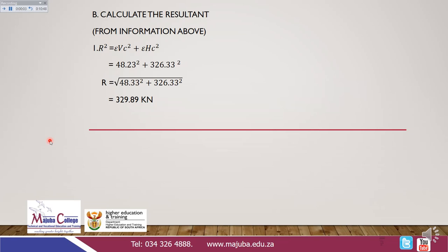If asked to calculate the resultant from the above information, we use the theorem of Pythagoras: R² = ΣFy² + ΣFx². So R equals the square root of 48.23² + 326.33², giving a resultant magnitude of 329.89 kilonewton.